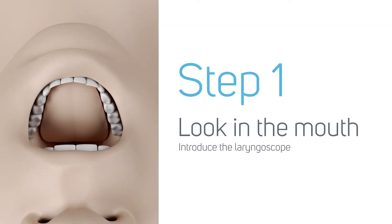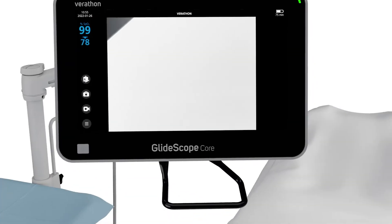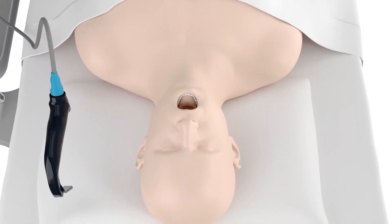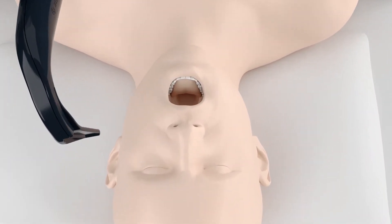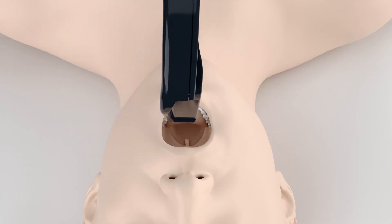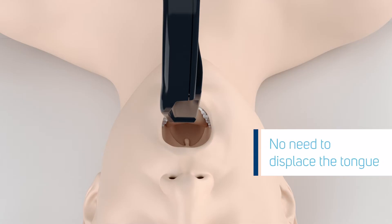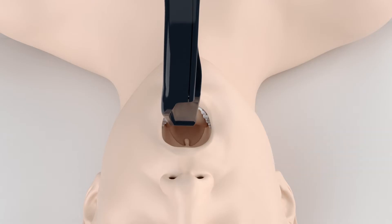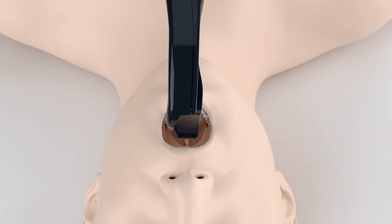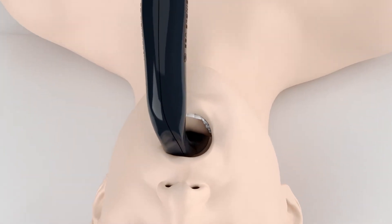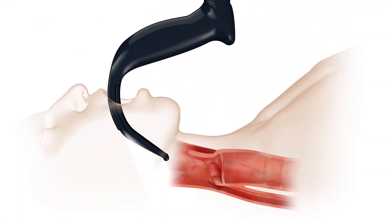Begin step one with direct vision, looking directly into the patient's mouth. With the patient appropriately positioned and with a GlideScope Videolaryngoscope in your left hand, introduce the blade midline into the mouth. Unlike direct laryngoscopy, the hyperangulated Videolaryngoscope is introduced midline — no lateral displacement of the tongue is typically required. Gently advance the laryngoscope along the curvature of the tongue until the tip of the blade is past the posterior portion of the tongue and into the oropharynx.